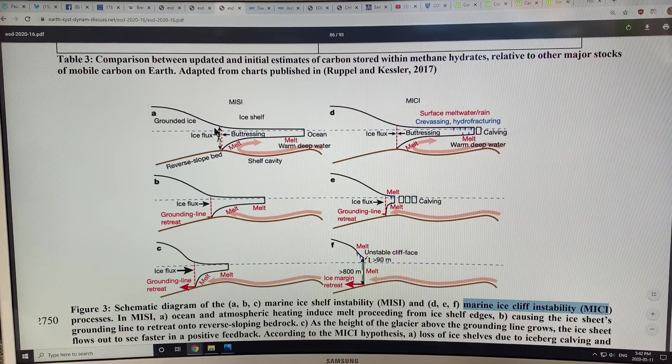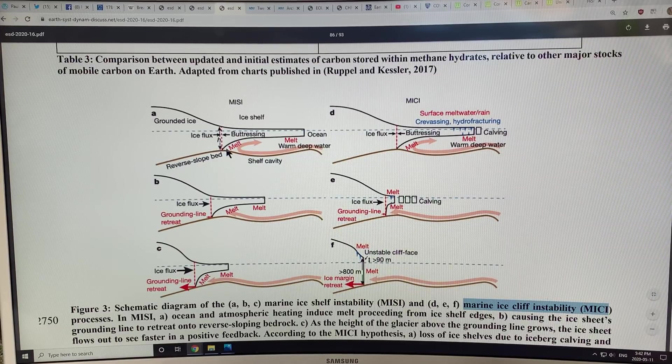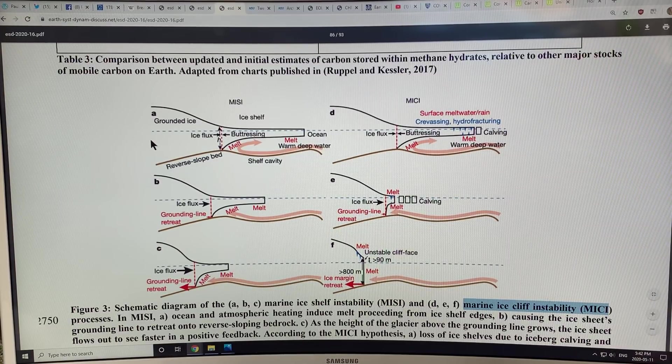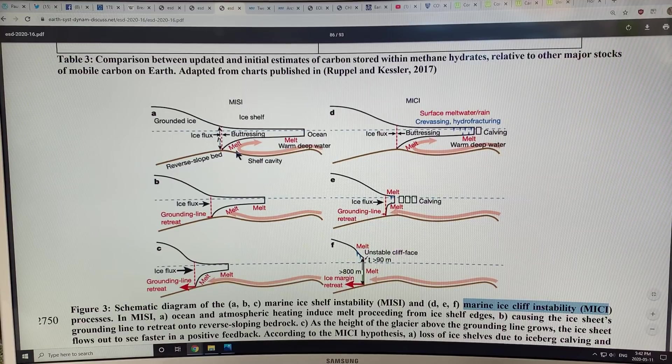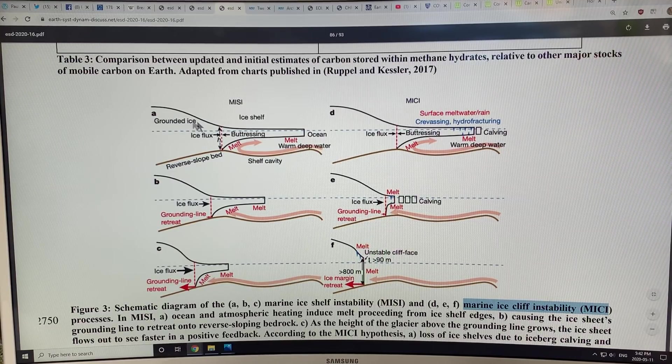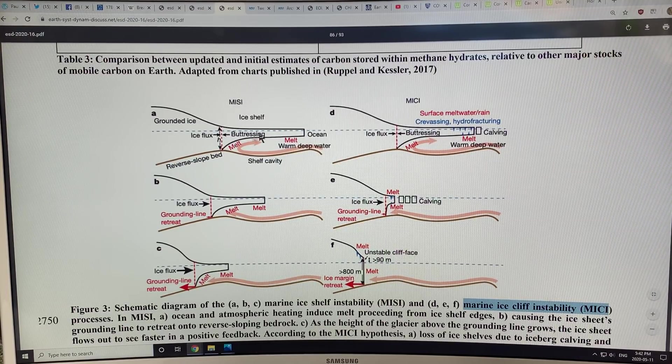Here we have the grounded ice, grounded on the bedrock. In many parts of Antarctica and Greenland, we get a reverse slope bed. As you go further away from the land, the water gets shallower. There can be variation here, so you can get this cavity. This is the grounded ice. Don't forget, the ice is always flowing, replenishing out here. We've got the floating ice shelf.